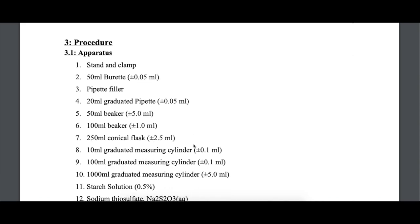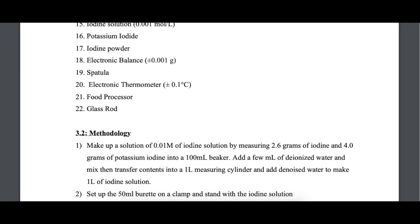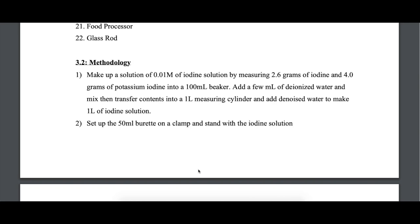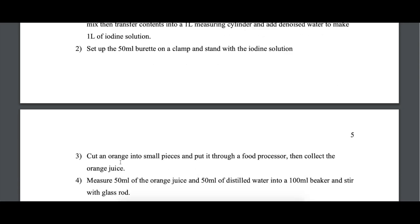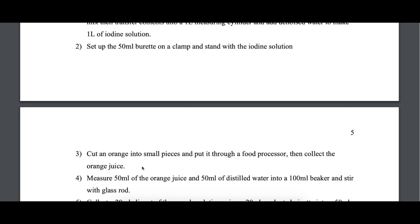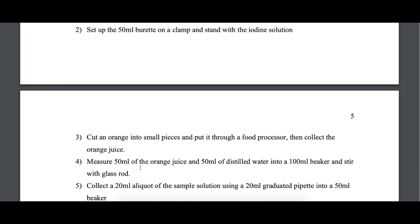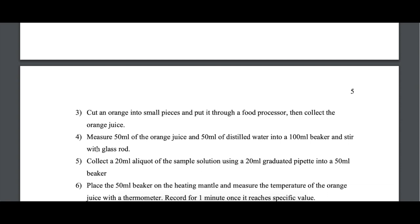The procedure is given with the apparatus listed here. That's fine, you can do that. Some details about the solutions that were used, how they were made. But let's look here. Cut an orange into small pieces, put it into a food processor, then collect the orange juice. That doesn't exactly explain how to extract the juice, and that, of course, is fundamental to doing this activity, so that someone can replicate what you did with another type of orange, another species of citrus, and follow what you did and compare their results to yours. But if they are not given the details as to how to extract the juice, then that part of the lab is greatly going to be lacking, and it's important to do that.